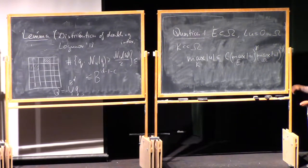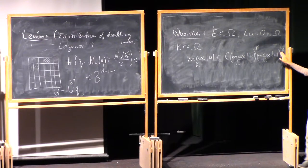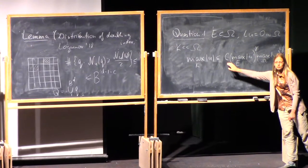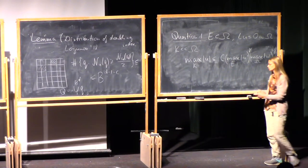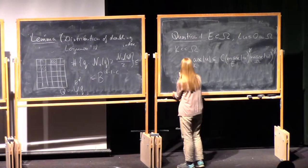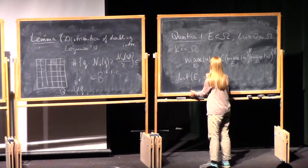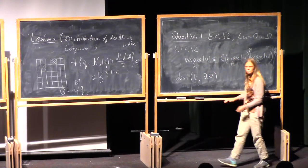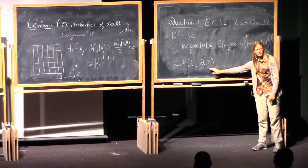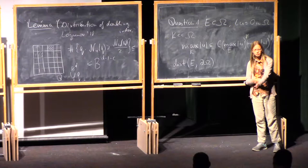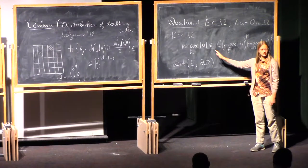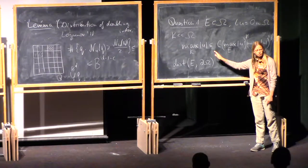And the question that we don't know how to answer is what is the dependence of these constants on the following quantity. I want to think about the distance from E to the boundary of the domain. When you go closer and closer your constants start to blow up. You lose the control.